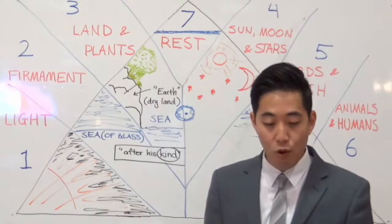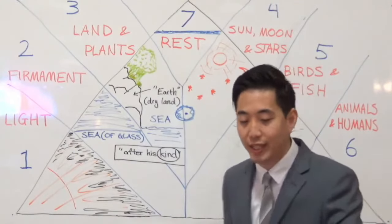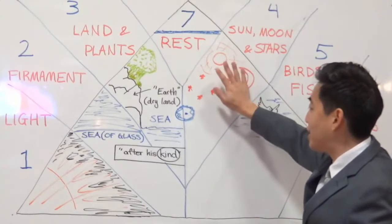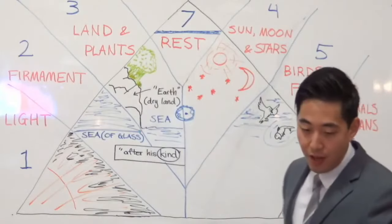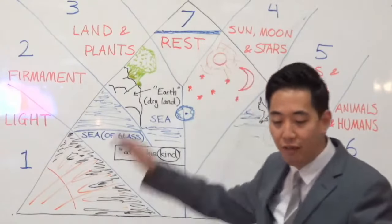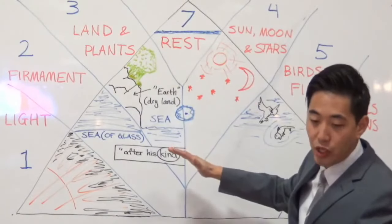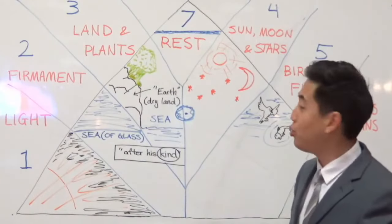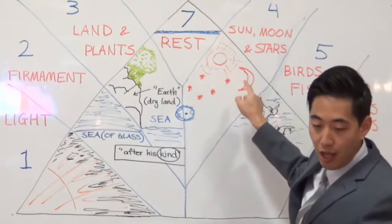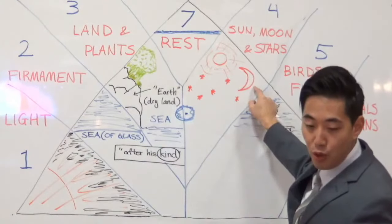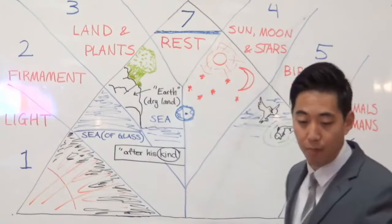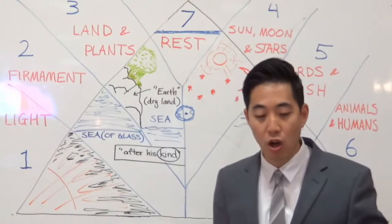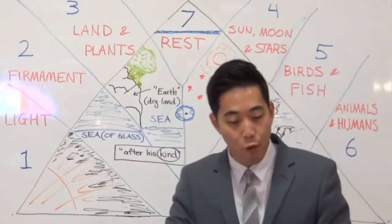And let them be lights in the firmament of the heavens — the sun, moon, and stars are in the firmament of the heaven to give light upon the earth, and it was so. And God made two great lights: the greater light to rule the day — the sun — and the lesser light to rule the night — the moon. He made the stars also. Let's look at Psalms 147.